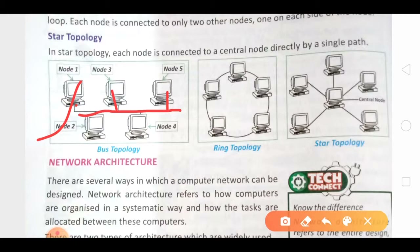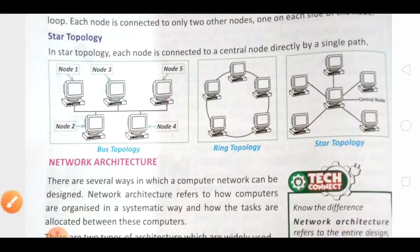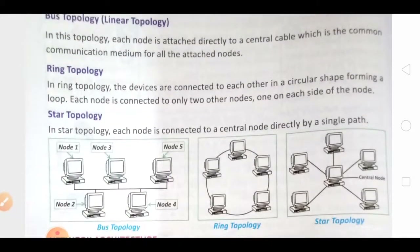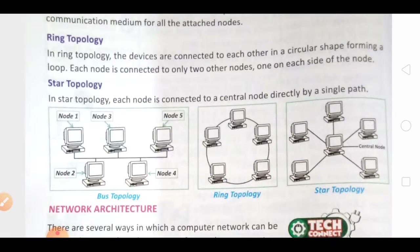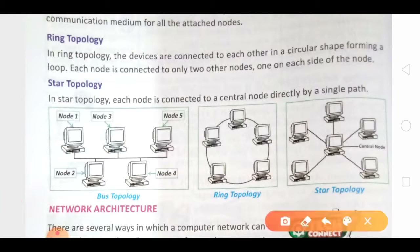Bus topology is the cheapest topology and data communication is reliable in it. But if the backbone of the network gets broken, the whole communication will get stopped — this is the only problem with bus topology. The extension of the network is easier in bus topology compared to other topologies. The next is ring topology. As its name implies, in ring topology the computers are arranged in a ring type structure, as you can see in the figure.